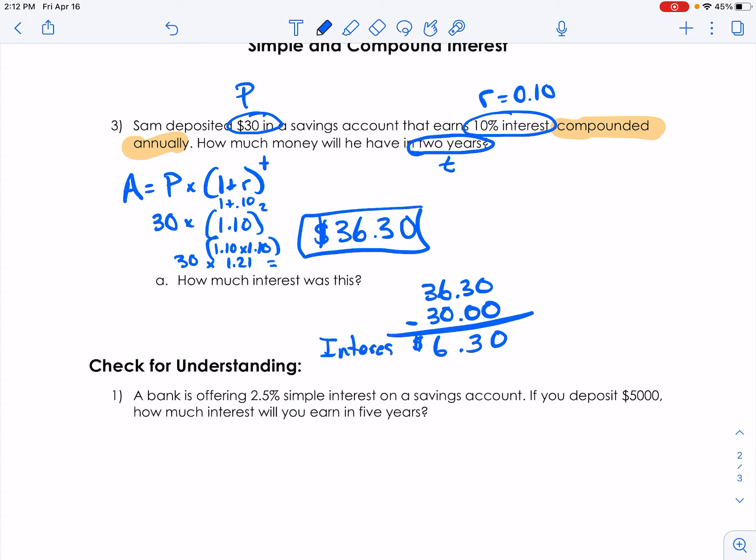So we earned $6.36 in interest. That's how much the bank paid us for keeping our money.